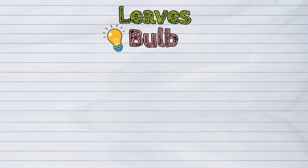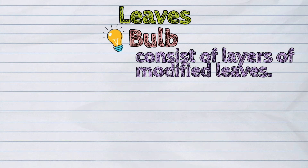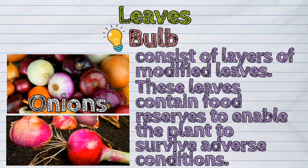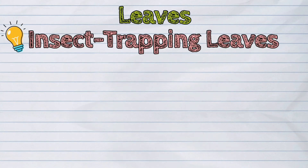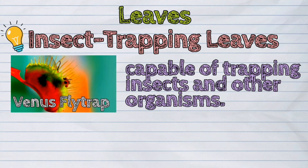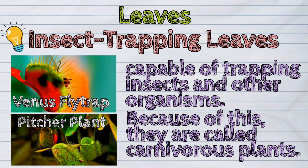A bulb consists of layers of modified leaves. These leaves contain food reserves to enable the plant to survive adverse conditions. The best example of this are onions. Insect-trapping leaves are another example of modified leaves, capable of trapping insects and other organisms. Examples are the Venus flytrap and the pitcher plant. Because of this, they are called carnivorous plants.